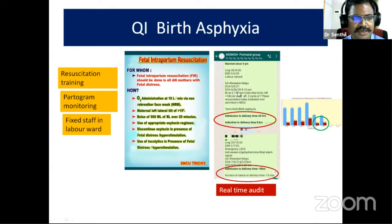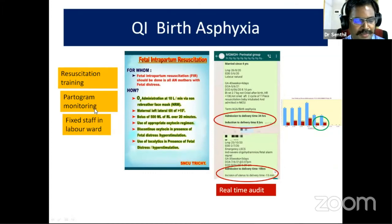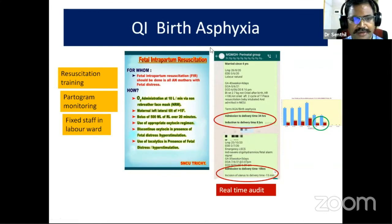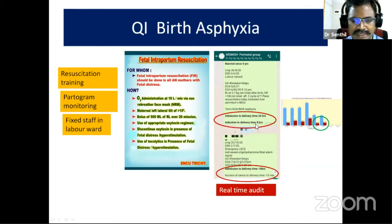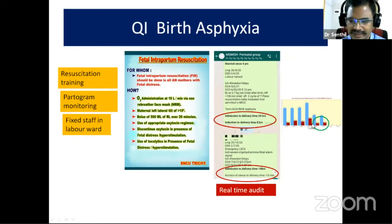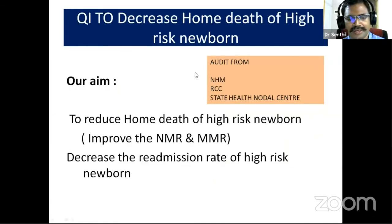As an example, our birth asphyxia rate and case fatality rate were very high. We started with NRP training, partogram monitoring, and fixed staff in the labor ward, but were still unable to reduce the birth asphyxia rate. We then analyzed further and introduced video intrapartum surveillance, real-time audit of admission-to-delivery time, induction-to-delivery time, and uterine incision-to-delivery time, and formed a WhatsApp group with all obstetricians. After that, we found a decrease in the incidence of birth asphyxia.